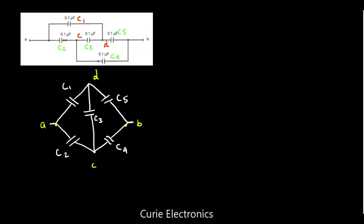Definitely the bridge is balanced. How? Now if we take the ratio of C5 upon C1 equals C4 upon C2. Because all values are 0.1 microfarad, we get 0.1 upon 0.1. So we will get 1 as the ratio. So the bridge is balanced.